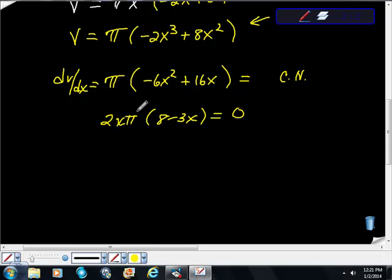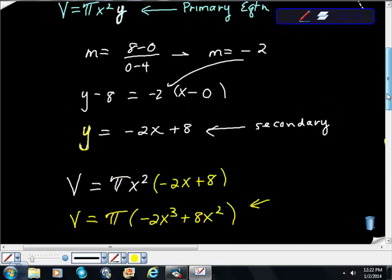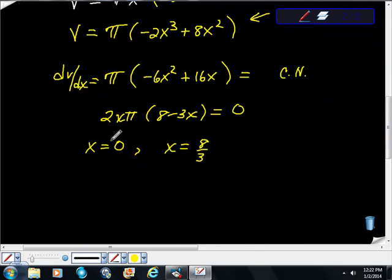So our two possible values for making this thing 0 using 0 product property, if x was 0, this thing would be 0 times that would be 0. So x is equal to 0 is a numerical possibility. Or x is equal to, what is it, 8 thirds? Well, we know that the x can't be 0 because we can't have this base equal to 0. So we can eliminate that as extraneous. So I'm just going to put a line through that whole thing. So x is equal to 8 thirds.